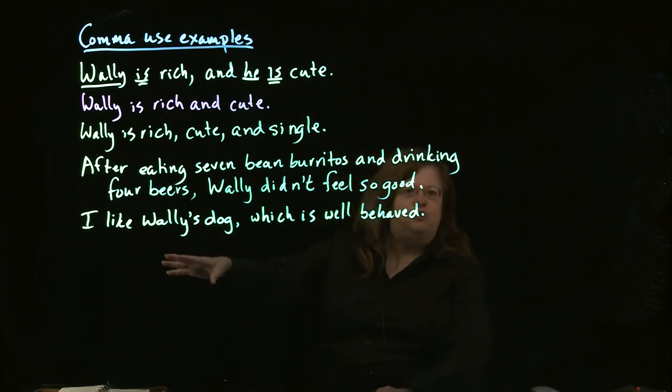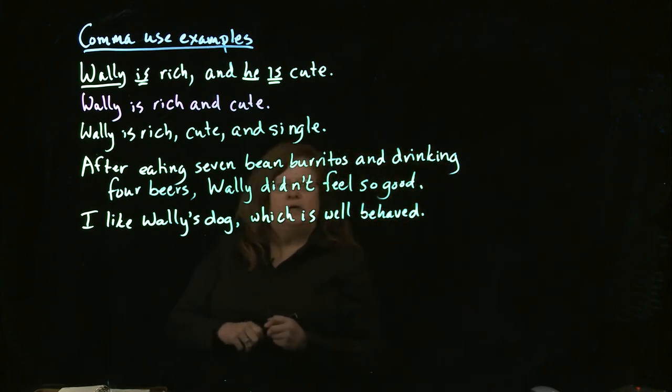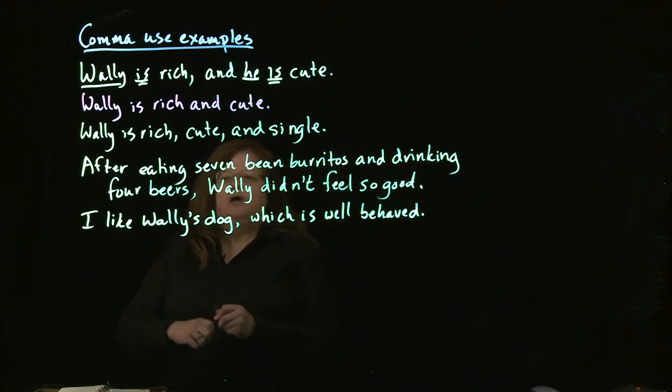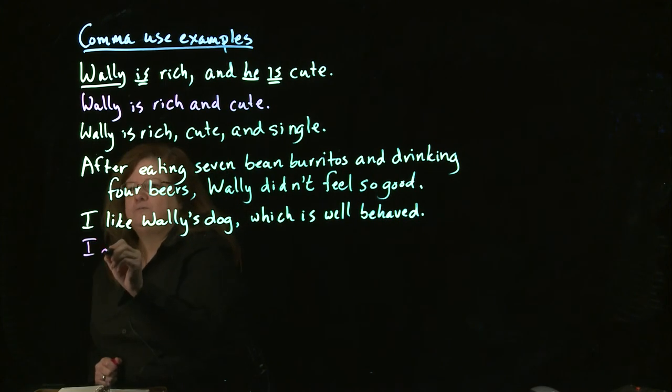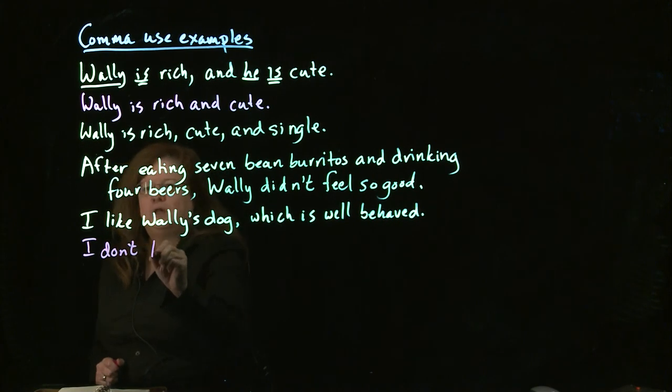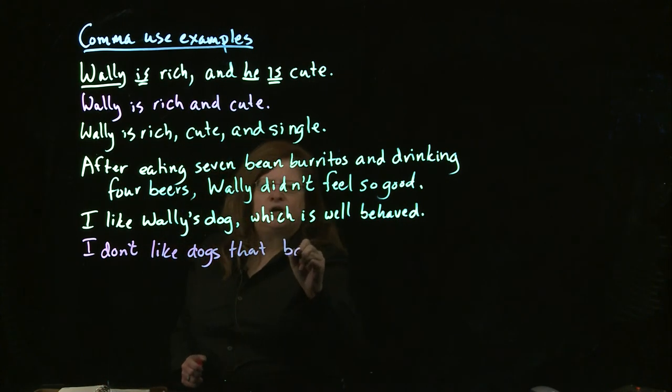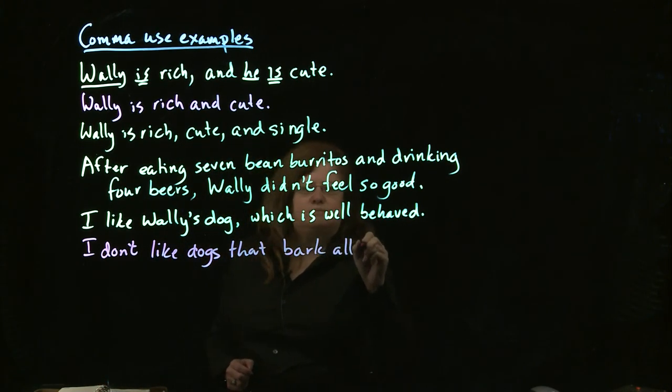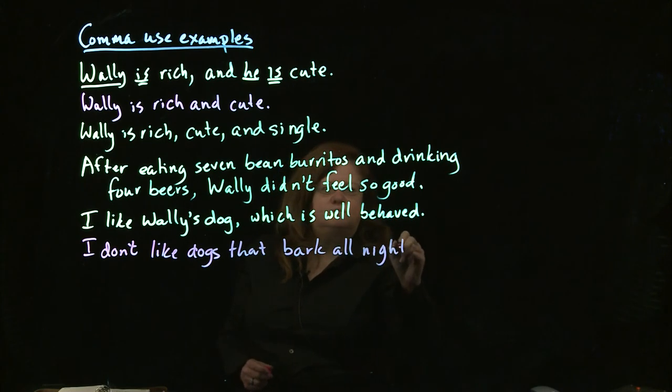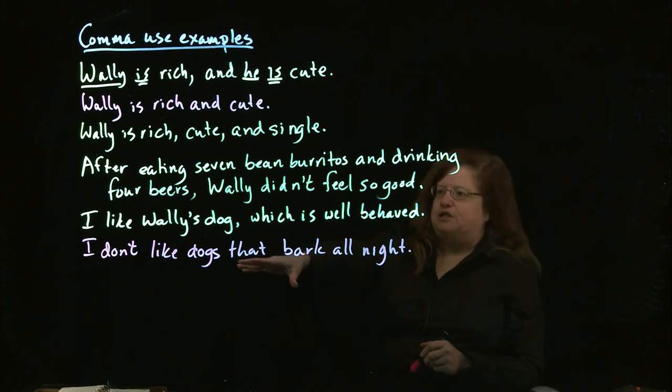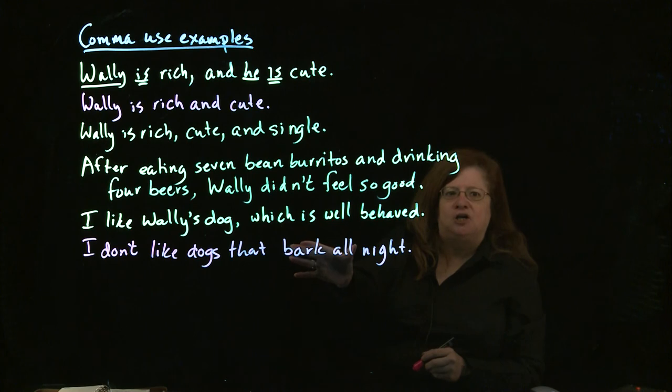On the other hand, if you have essential information, you don't want to put a comma in because then you change the meaning of the situation. So I can say, I don't like dogs that bark all night. This is essential information. If I take out this dependent clause, if I take out that bark all night, I end up with, I don't like dogs, which is not true.